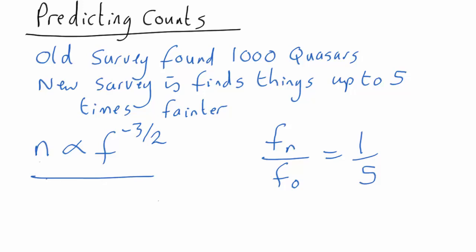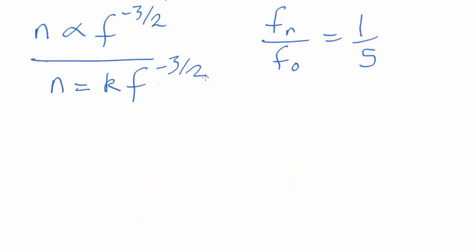Well, what you can do whenever you get something proportional to something else, remember what it's actually telling you is that n is equal to some unknown constant times flux to the minus three over two. What we can do is write down the equation for the new number and the old number and divide them by each other. That way we don't need to know either of the fluxes.